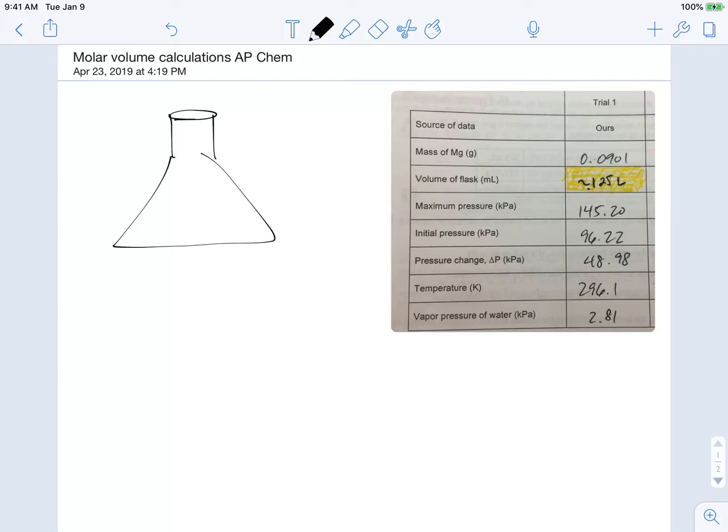Hey everyone, this is Mr. Mott. What we're going to do is go over the calculations involved in our molar volume of a gas lab, trying to prove that one mole of gas at standard temperature and pressure will occupy 22.4 liters of space, of volume.